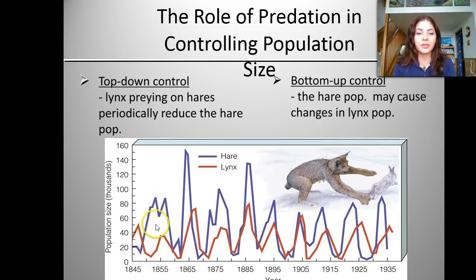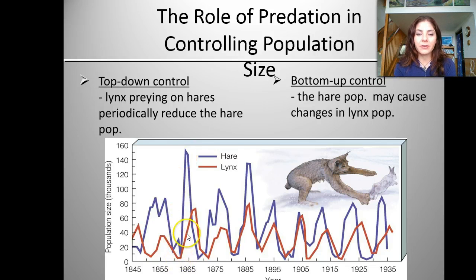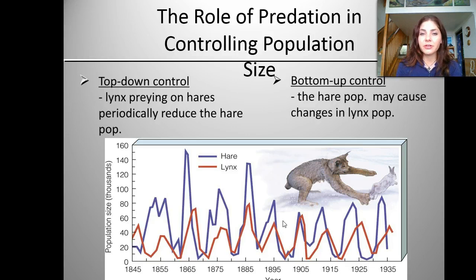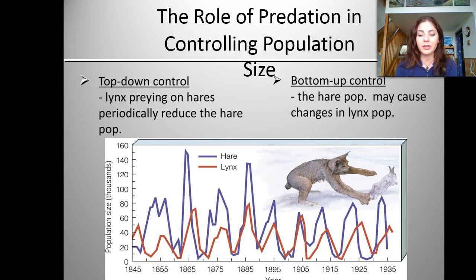As the hare population decreases, you'll see the lynx population decrease. When the hare population shoots up, eventually the lynx population goes up too. The reason is that the hare is controlling the population size of the lynx — if there is an overabundance of hare, they can support more lynx. However, if the population of hare dips, the lynx population will decrease too because they won't have enough food to sustain their population size.